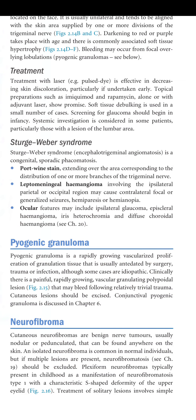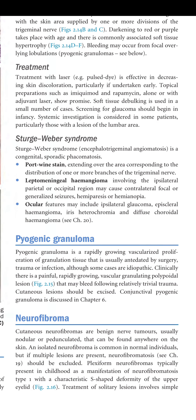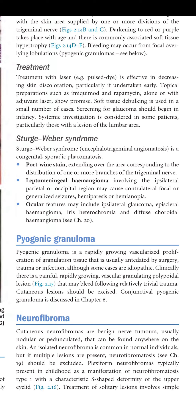Port wine stain extends over the area corresponding to one or more branches of the trigeminal nerve. Leptomeningeal hemangioma involving the ipsilateral parietal or occipital region may cause contralateral focal or generalized seizures, hemiparesis, or hemianopia. Ocular features may include ipsilateral glaucoma, episcleral hemangioma, iris heterochromia, and diffuse choroidal hemangioma.